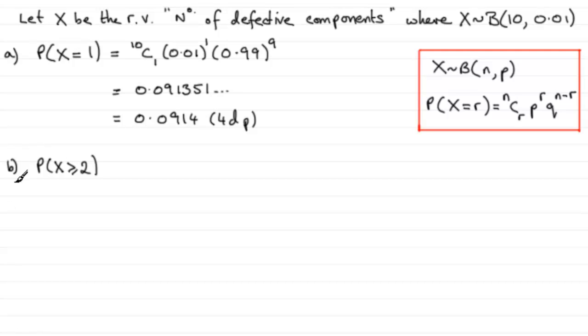So what we would want to do is do 1 minus the probability that x equals 0 and the probability that x equals 1.